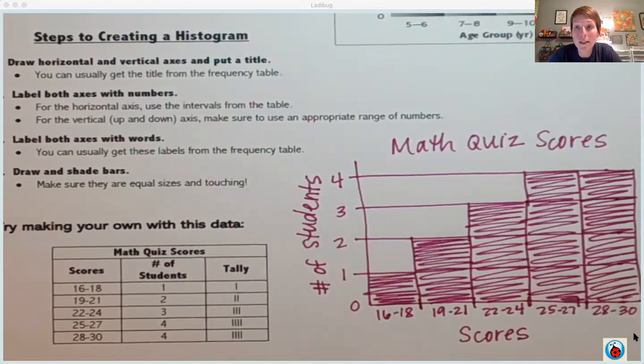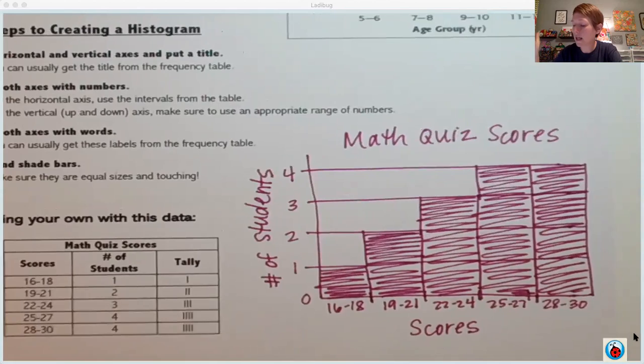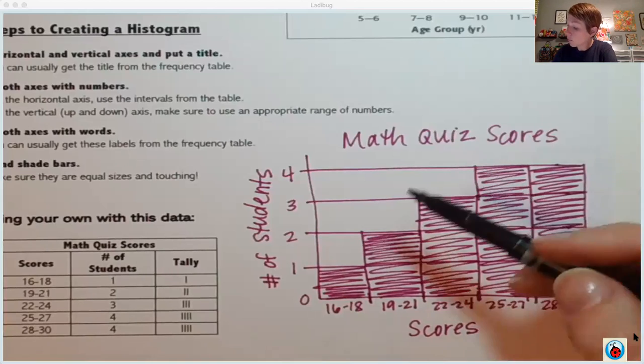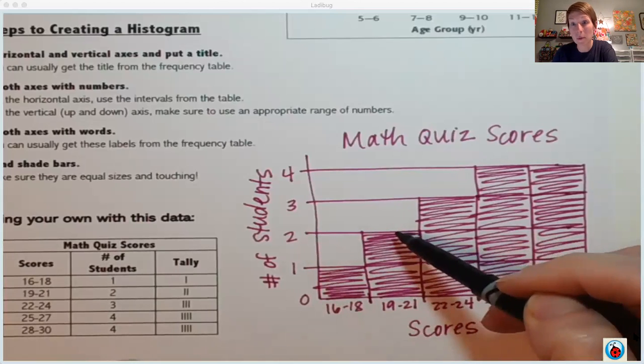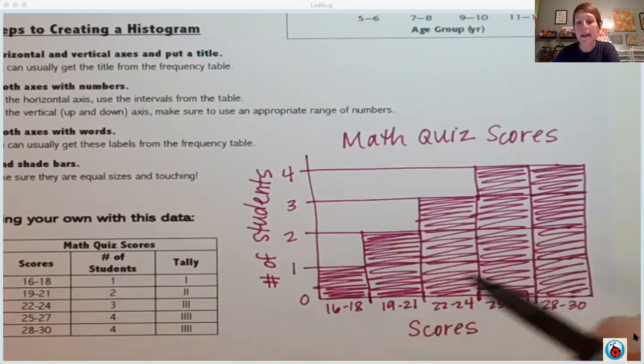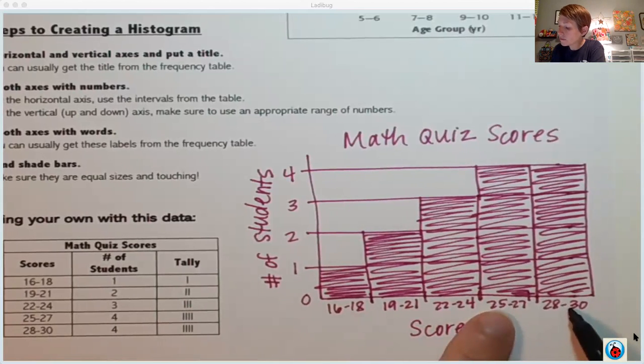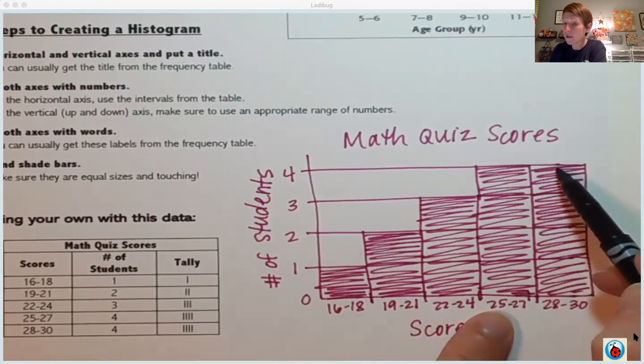Now your Google Forms assignment today is not going to have you making any histograms. It's going to have you answering questions about histograms and their data. So for example, on this histogram we just made about math quiz scores, I could ask something like how many students scored between a 19 and a 21. Well that particular bar goes up to two, so that would be two students. I could ask how many students scored 25 or higher.